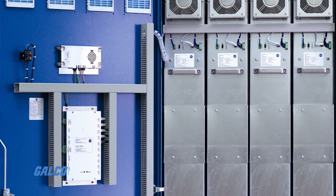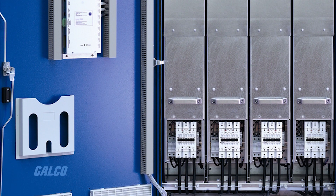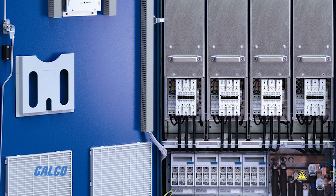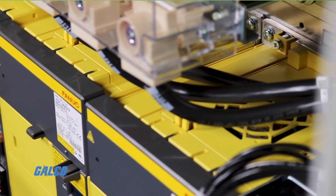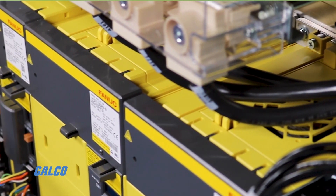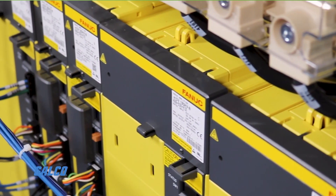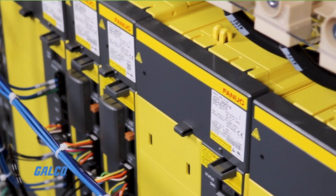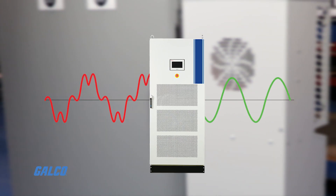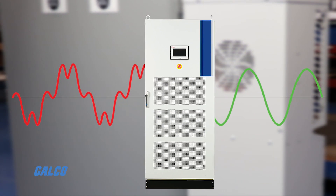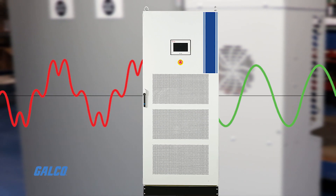Active filters are largely used to mitigate harmonics on the line side of control equipment, like an AC drive. Harmonics reduce the amount of usable power that's delivered to a load, but an active filter can smooth the waveform and boost the resulting signal.